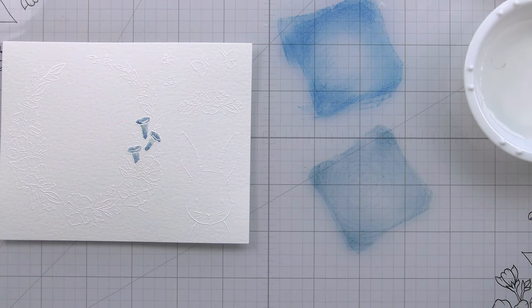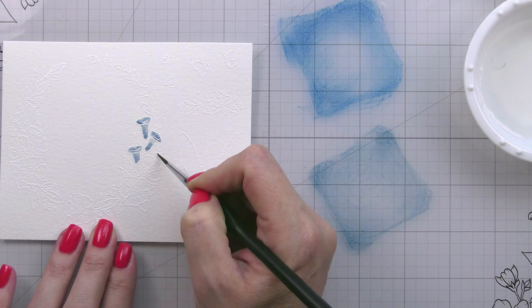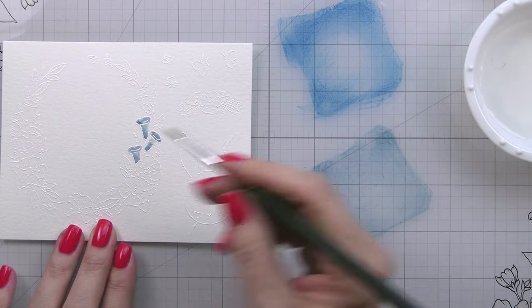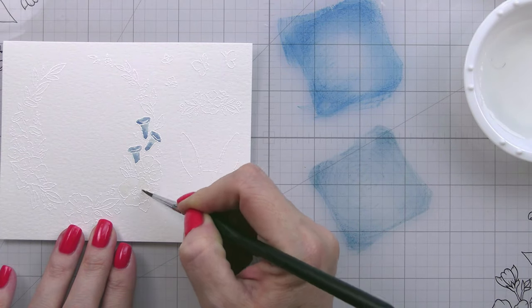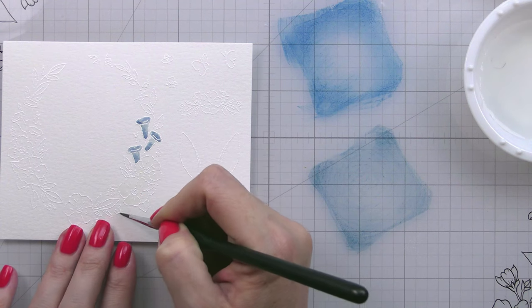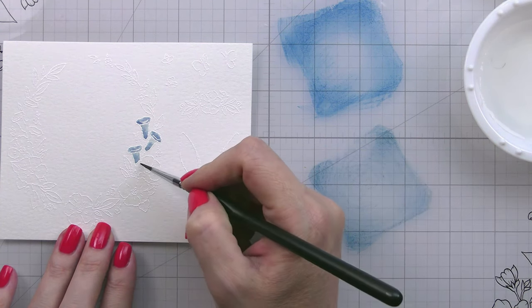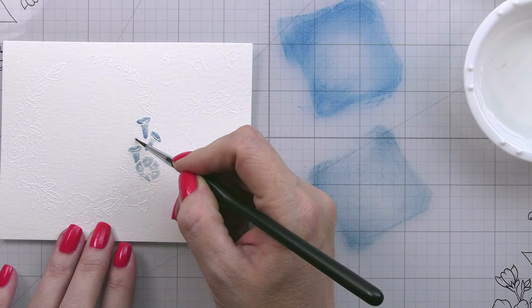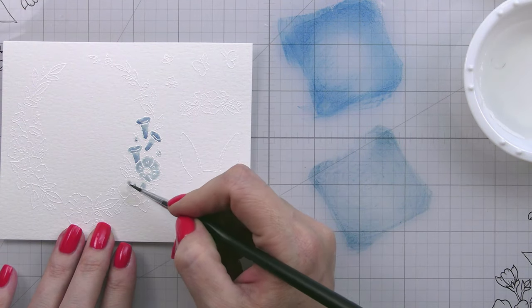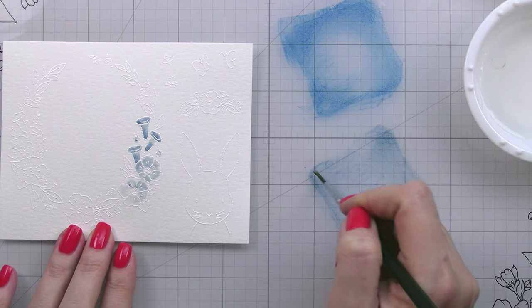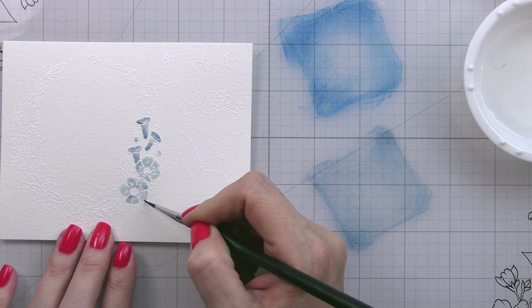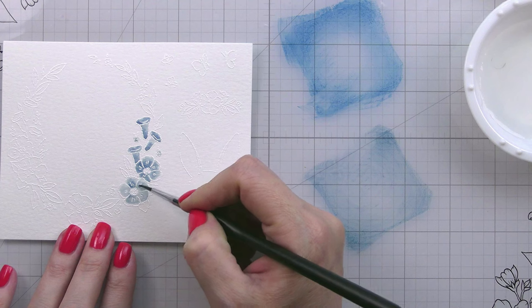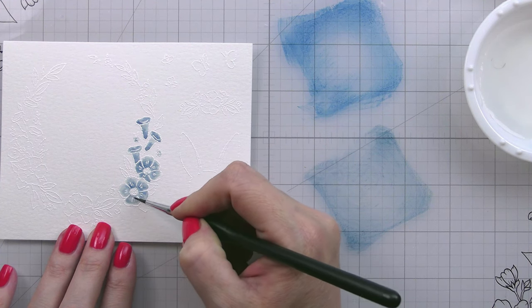Now, normally with watercolor, you cannot work next to two areas that are wet because they will bleed into each other and it makes it very hard to get a crisp image. However, because we're using the little trick of the white heat embossing, they kind of create little walls for your water to sit in. So it has a little barrier between each of the images. So you don't have to worry so much about anything running together. And it's just a really easy way to just drop color in. So you put down your clean water, you drop your color in where you want it to go, and then just leave it and let the water do the work.